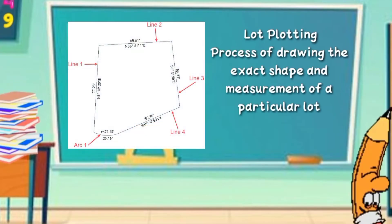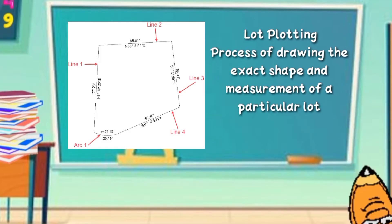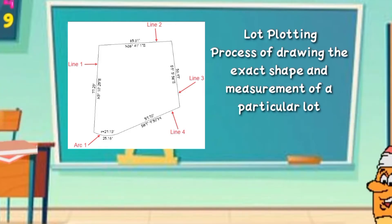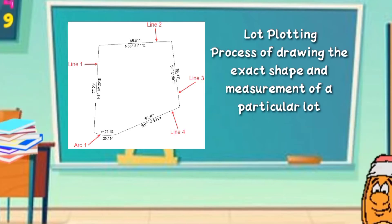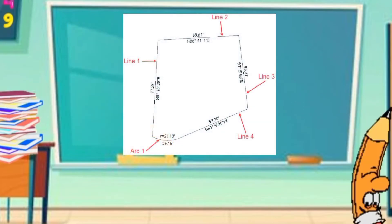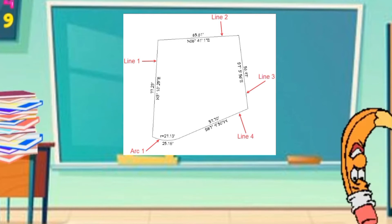Lot plotting. It is the process of drawing the exact shape, square, rectangle, trapezoid, and measurement of a particular lot from the technical descriptions shown in the title. The boundaries and lot orientation on the north, east, west, and south are also attained.